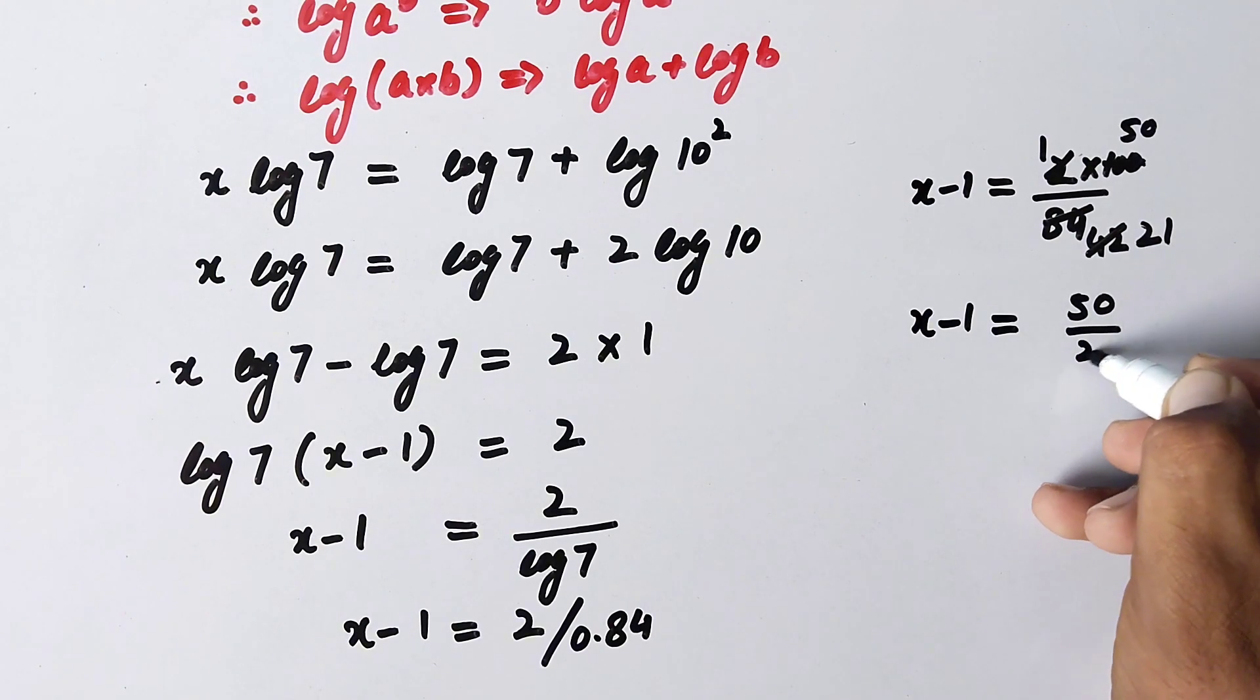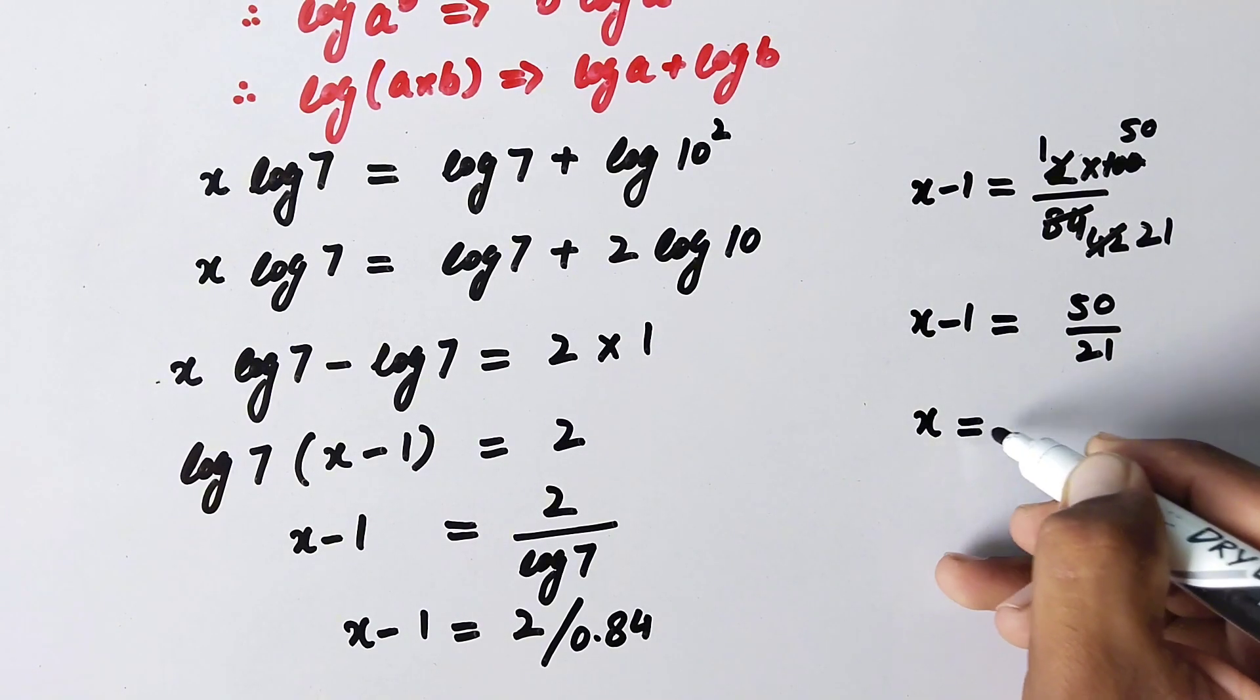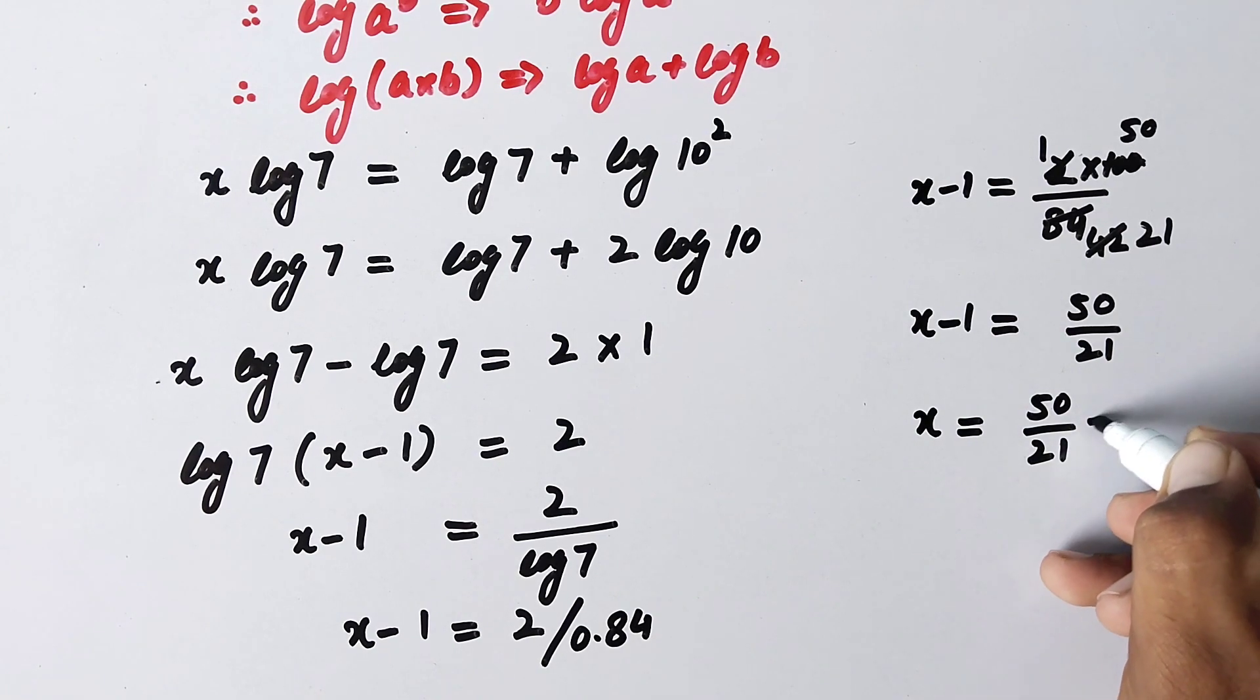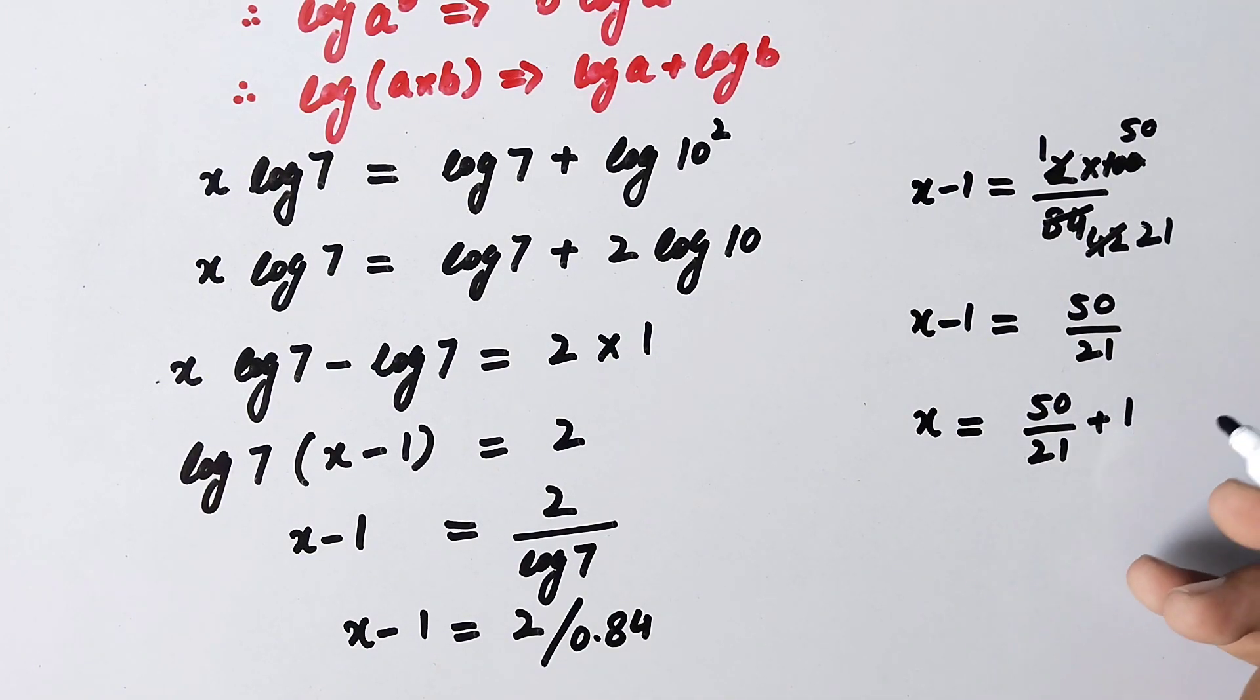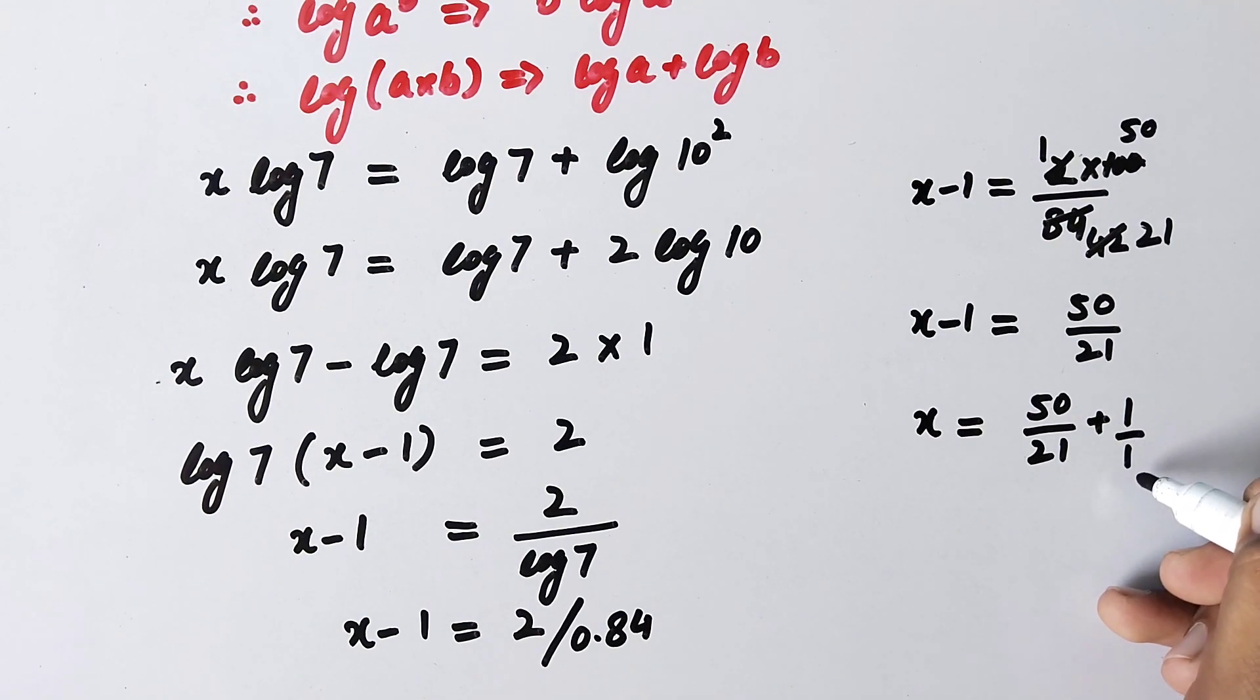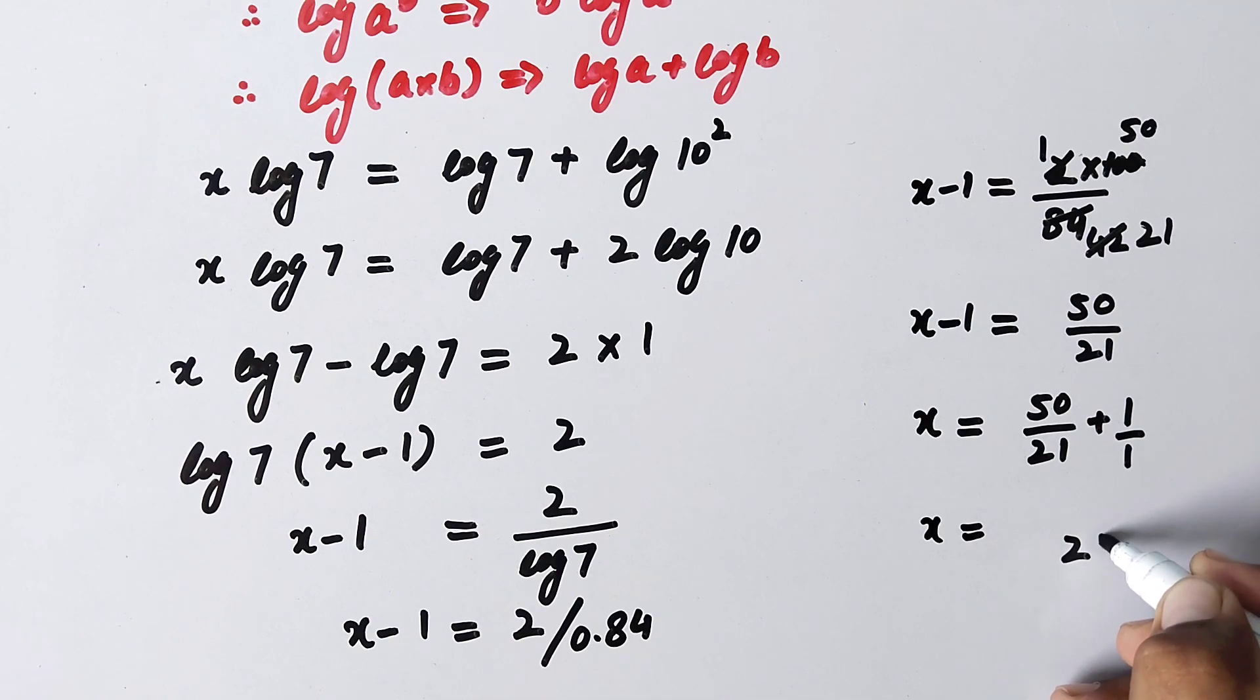And now next step x is equal to 50 over 21—this negative value will be positive on this side. So to solve this one we will write denominator here that will be 1, so by adding these values using least common multiple it will be 21.